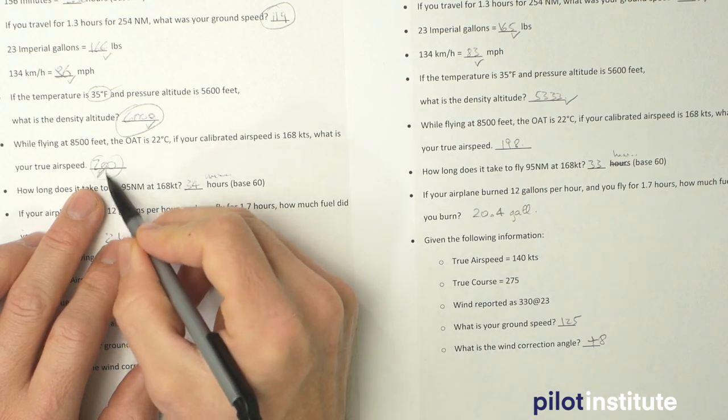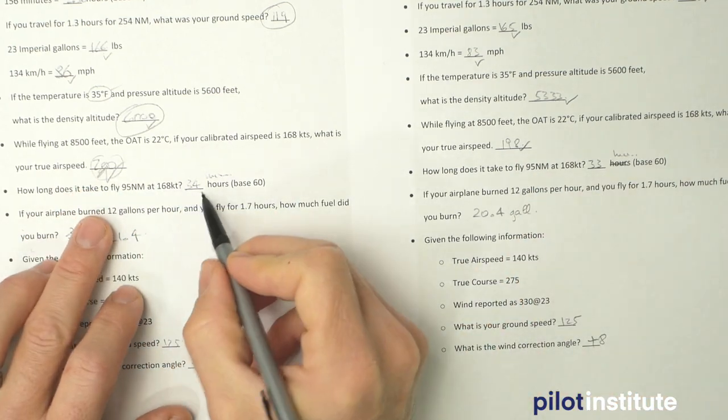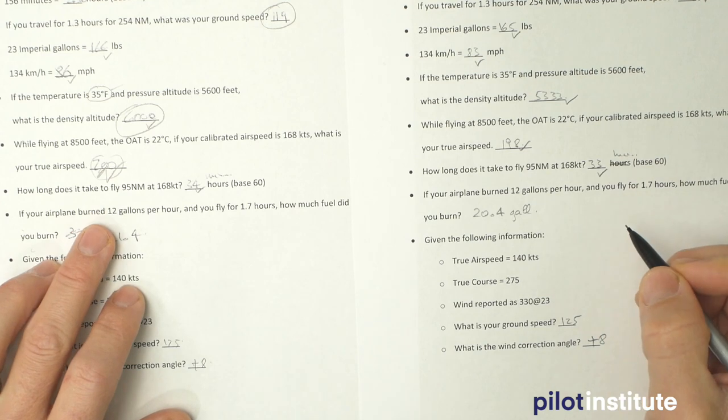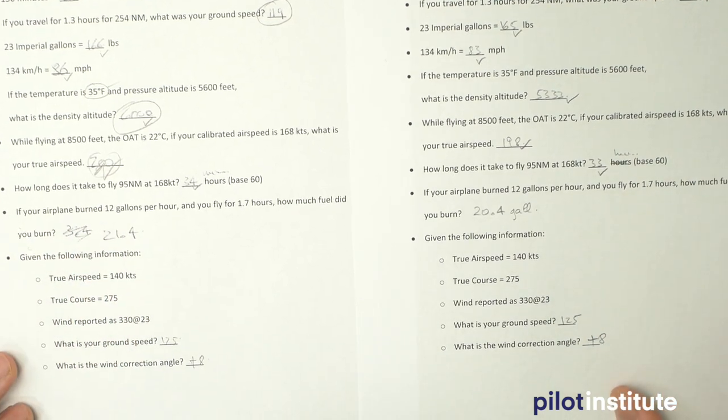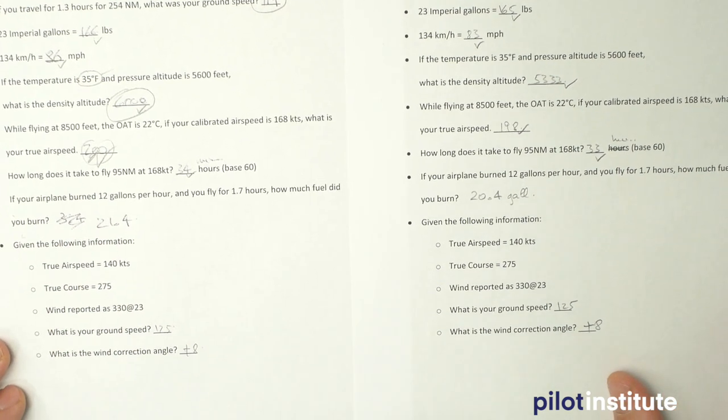I got 200 here, which is good. And then 198 here, that makes sense. 34 minutes, 33 minutes when we're trying to go 95 nautical miles at 168 knots.